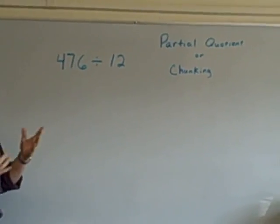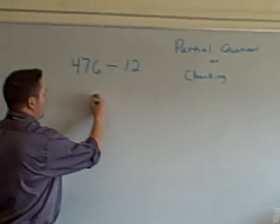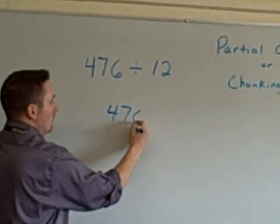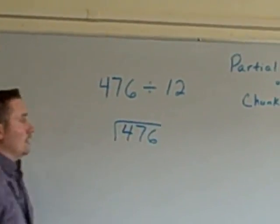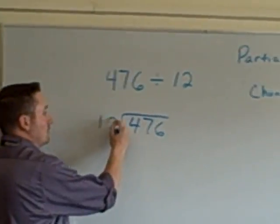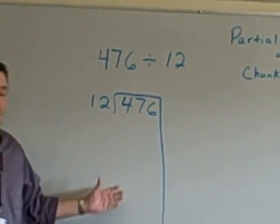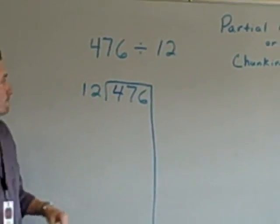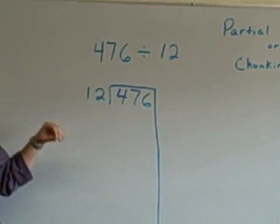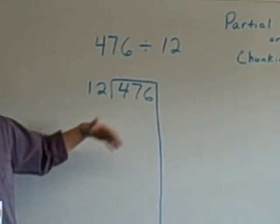Okay, so how it starts off is pretty much like normal. 476 inside the box here, and we're dividing by 12, that goes on the outside. The added step you do is you bring this down. Don't judge the straightness of my line. Now, what we want to ask the kids is, how many times does 12 go into 476?